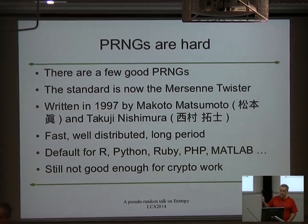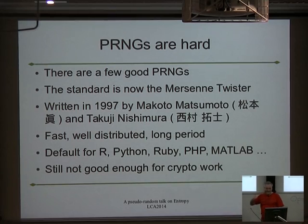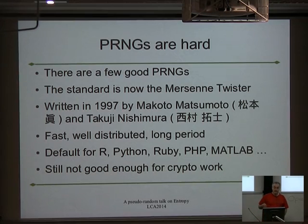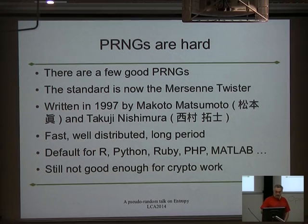The Mersenne Twister pseudo-random number generator is very good. It has an extremely long period, generates very good quality well-distributed numbers, and it's fast for a random number generator. But almost the very first thing on the man page is: please don't use this for crypto.